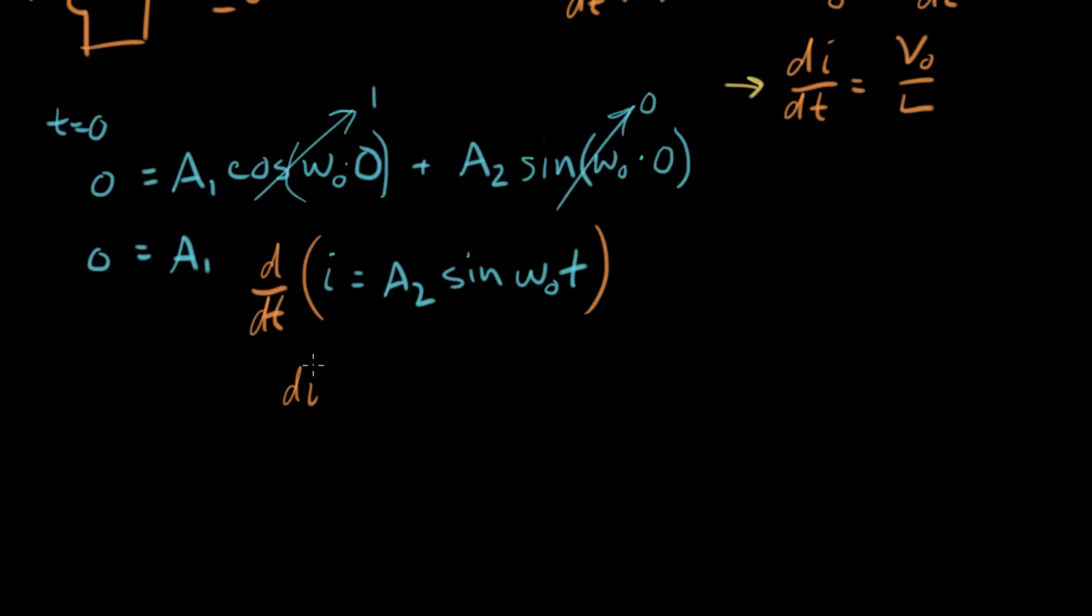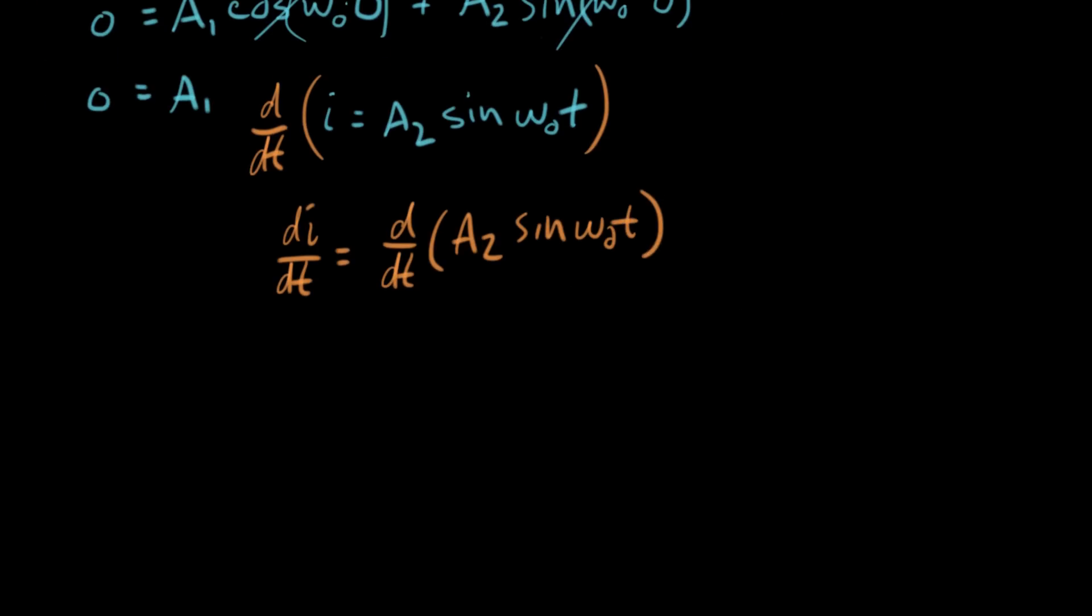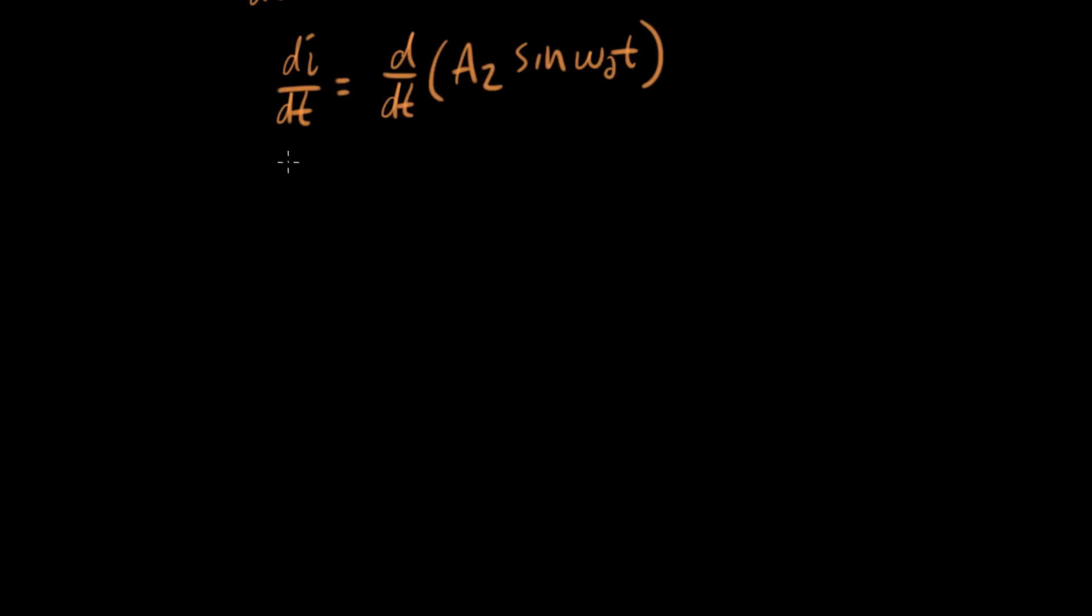On the left side, we'll get dI/dt. And on the other side, we'll get d/dt of A2 sine omega-naught t. Let's take that derivative. We get dI/dt equals A2 comes out of the derivative, and the derivative of sine omega-naught t with respect to t is omega-naught times cosine omega-naught t.